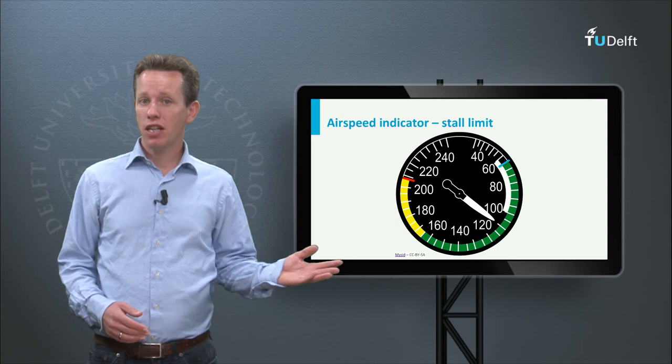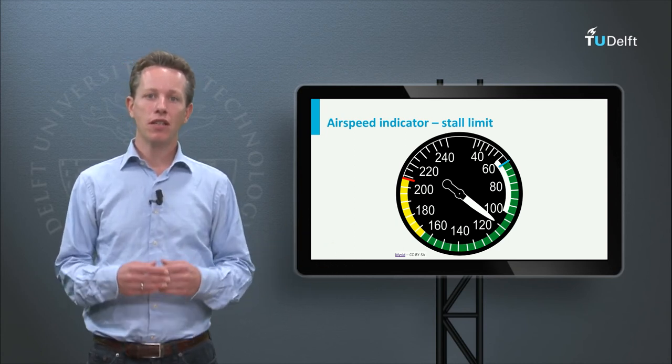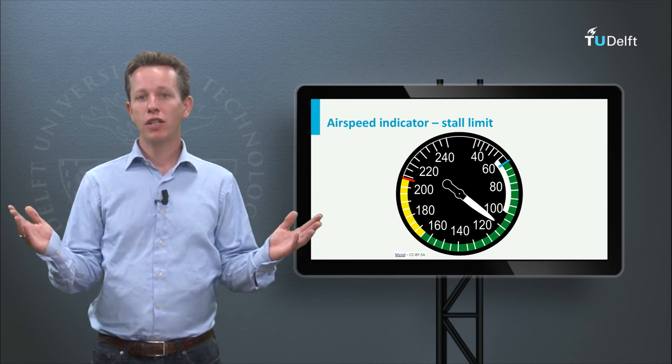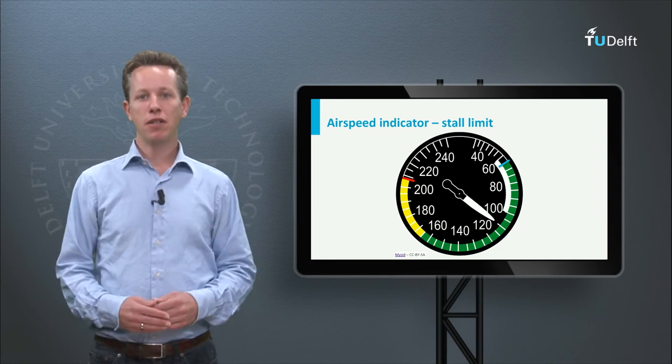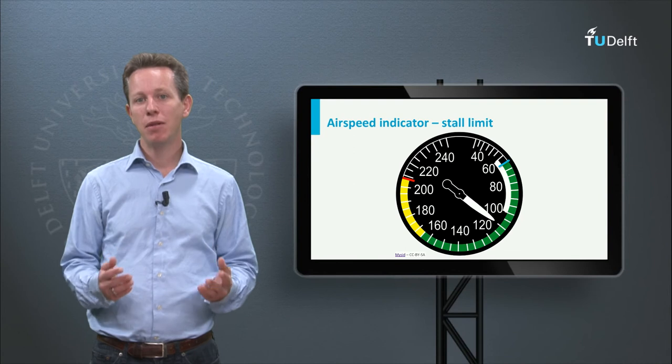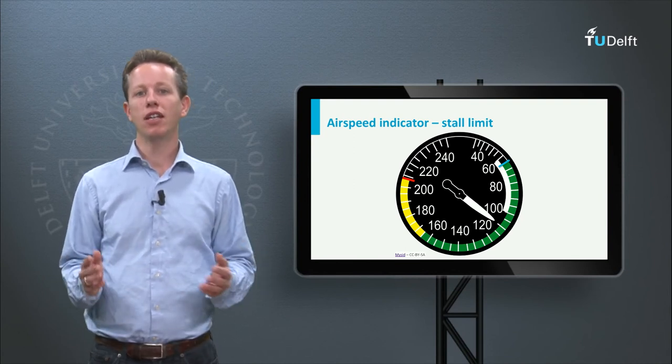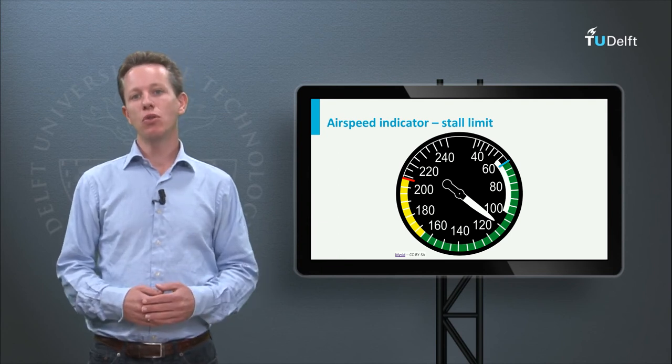This may seem strange, an airspeed indicator that does not provide the right value, but that is always correct when predicting the stall speed. So how do we explain this from a physical point of view? In essence, the airspeed instrument measures the dynamic pressure, and this is exactly what the wing experiences in the flow. That is why it correctly predicts the stall condition.